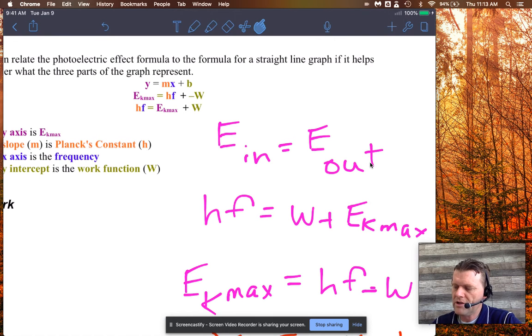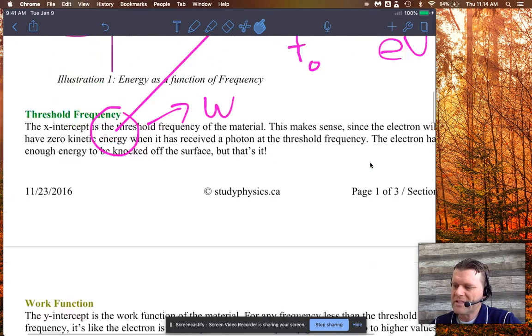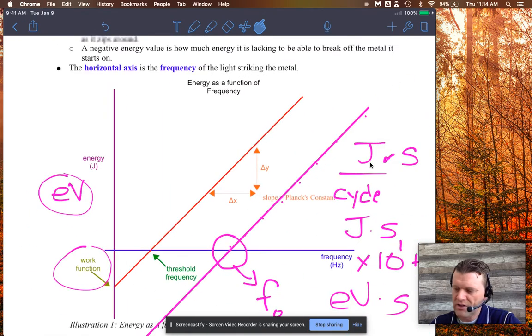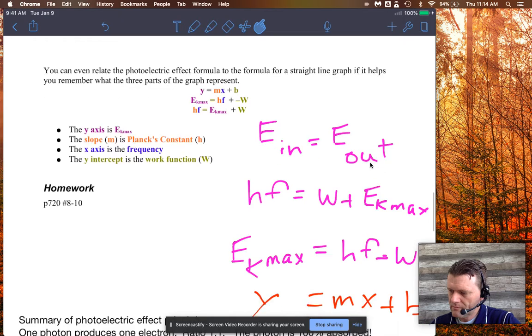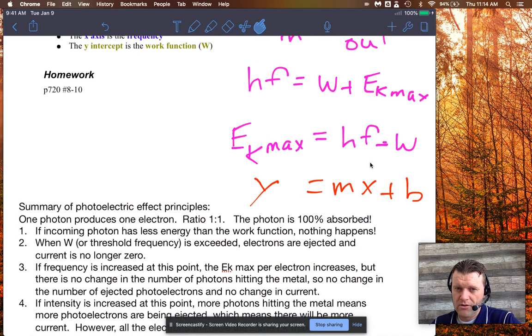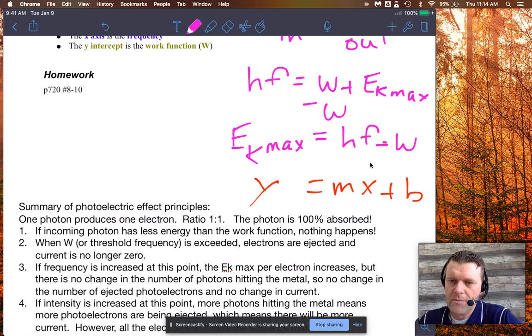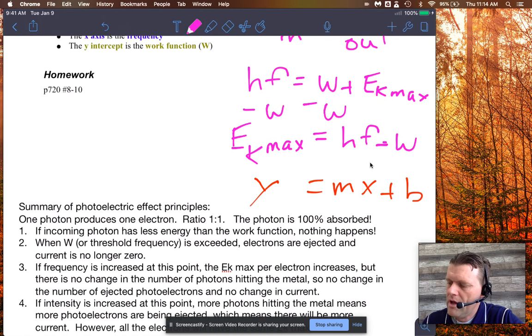For the photoelectric effect, the energy in has to equal the energy out. We have the photon HF is equal to the work function of the metal plus EK max. Because in our graph, EK max is the y value. We're putting the energy on the y-axis. I need to make that in the y position. So I just solve this. I basically subtract the work function from the right hand side and do that from the left. And then the conventional course is to put your variable you're expressing on the left. So EK max will equal HF minus W.